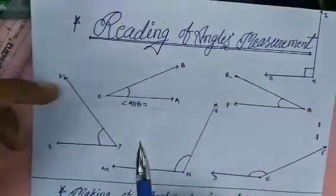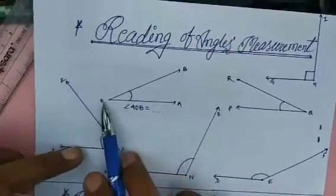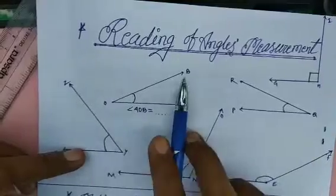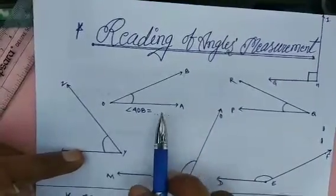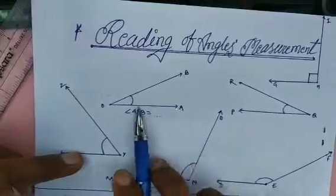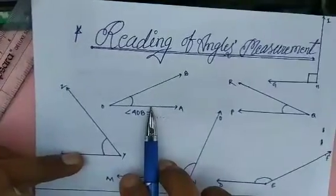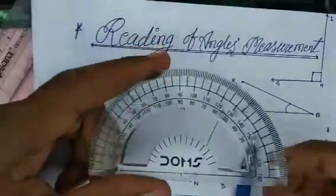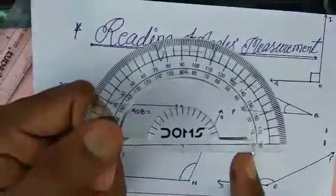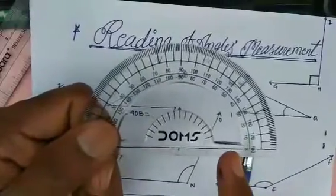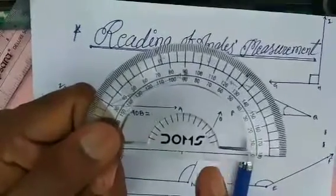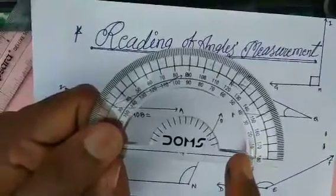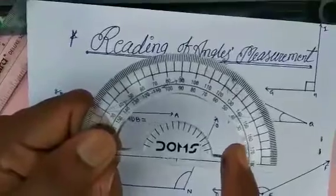First, you need to know the parts of these angles. The angle AOB has two rays: OA and OB. Ray OA is known as the baseline of this angle — remember that. OB is the supporting ray. On the protractor you can also see a baseline — the black line is the baseline. The numbers are given in two parts: on the downside, starting from 0, then 10, 20, 30, 40, 50, 60, 70, 80, 90, 100, 110.